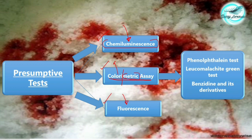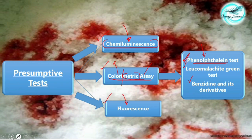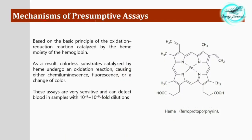Colorimetric assay — as the name suggests, 'colori' means color imparting, 'metric' means measuring, and 'assay' means examination. There are three tests for preliminary colorimetric identification of blood: the phenolphthalein test — and I want to know its other name in the comment section — the second is the leucomalachite green test, and the third is benzidine and its derivatives.